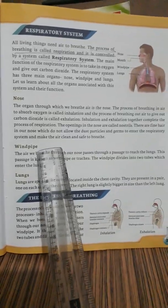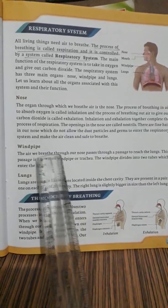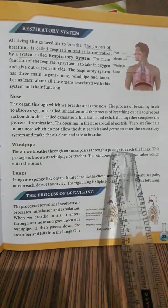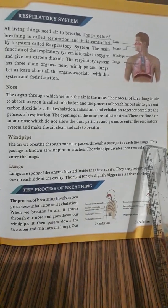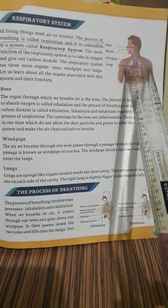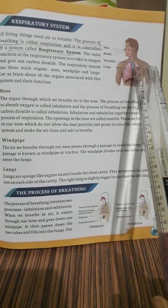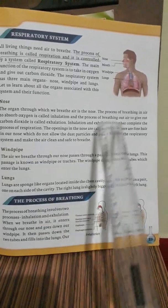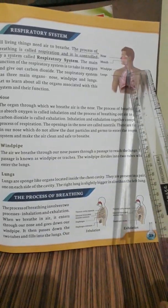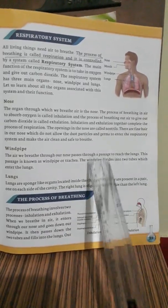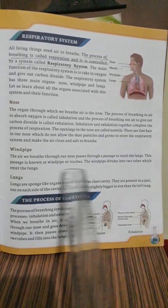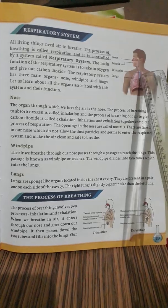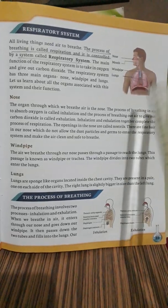The next part is the wind pipe. The air we breathe through our nose passes through a passage to reach the lungs. The wind pipe is also known as the trachea. It divides into two tubes which enter the lungs.